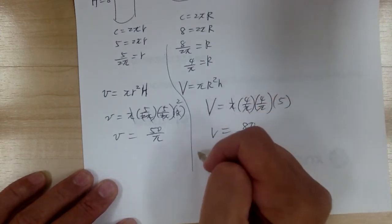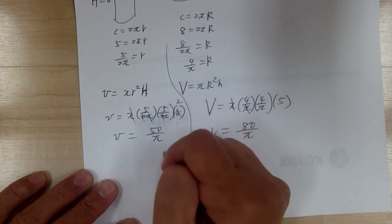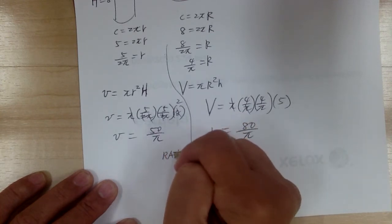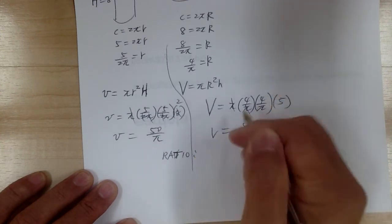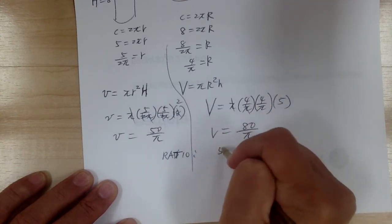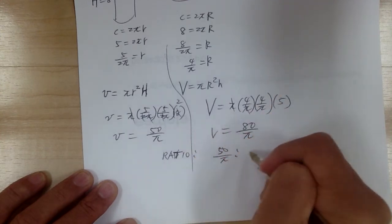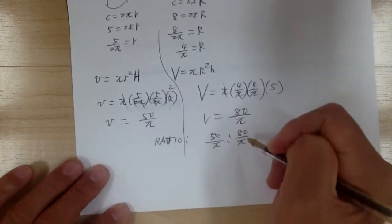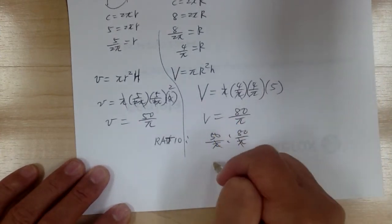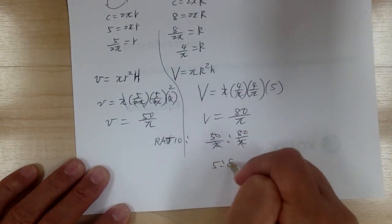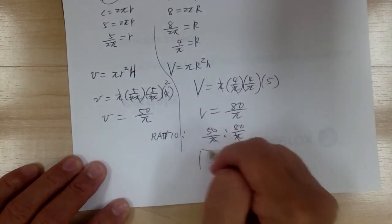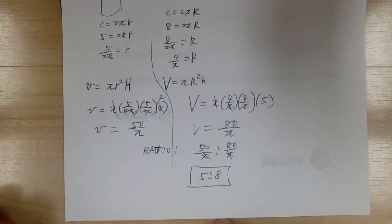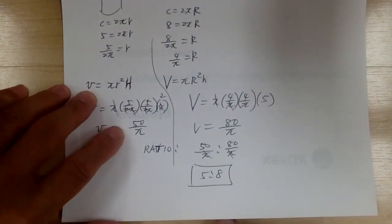The ratio would be 50/π to 80/π. Cancel those out and divide by 10, so you get 5 to 8.